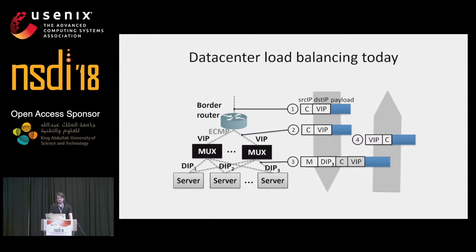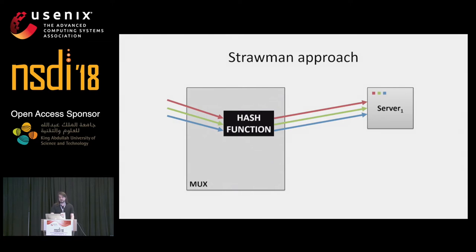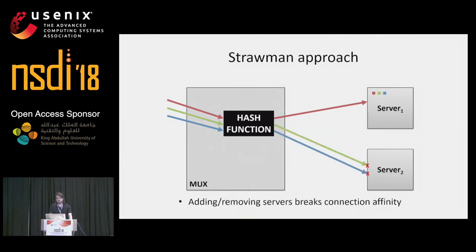This is highly advantageous since downstream traffic tends to be a lot larger than upstream traffic. So how do the muxes decide which connection goes where? A strawman approach would simply be to hash incoming packets as they come in. With only one server, the hash function sends all connections to it. But when an administrator adds another server, the hash function sends some connections to the second server, which doesn't have any state for those connections and will reset them.